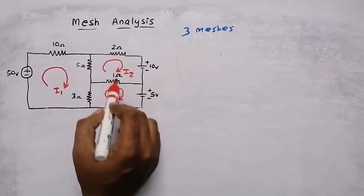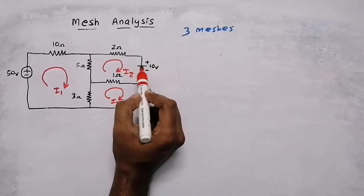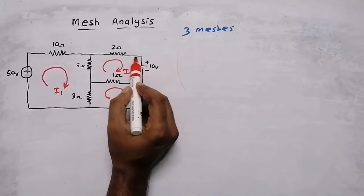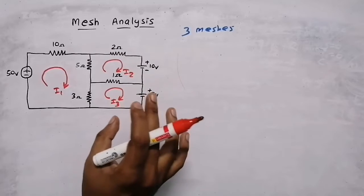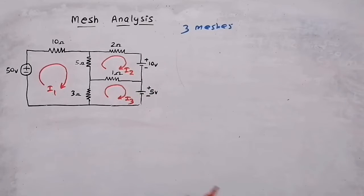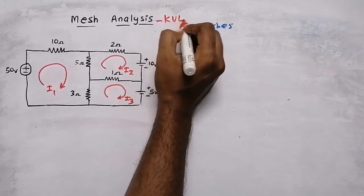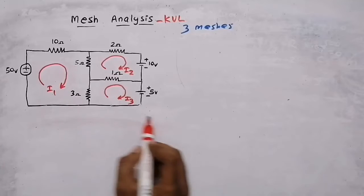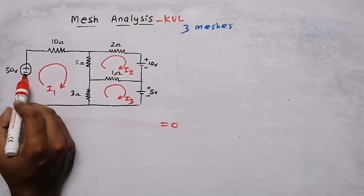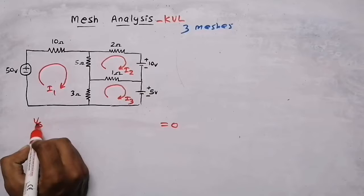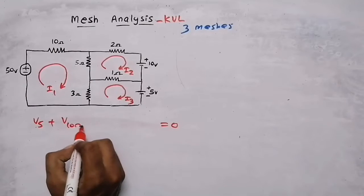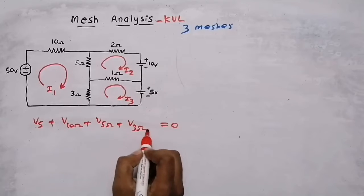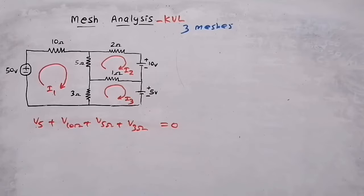Here I assume that the current is flowing in clockwise direction. But as you can see, this 10 volt source is positive, so the current will flow from positive to negative — that is opposite to my assumed direction. But for mesh analysis, you need to assume clockwise direction. In mesh analysis, you need to apply Kirchhoff's voltage law: the algebraic sum of voltages in a closed loop will be equal to zero. That means the source voltage plus voltage across the 10 ohm, 5 ohm, and 3 ohm resistors — the algebraic sum will equal zero.